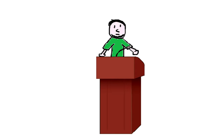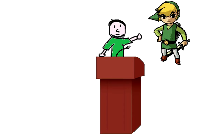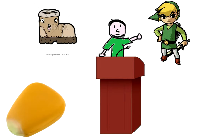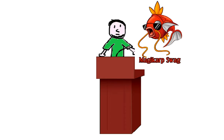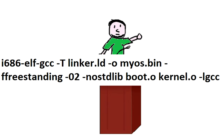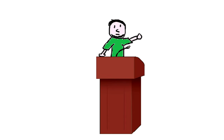Last but not least, the linker. The linker is a file that joins both previously created files into our final kernel program. Once we have written our linker file, we can use our cross-compiler to link both files using a disk command. That's all we need to make a simple kernel, and these are the results.